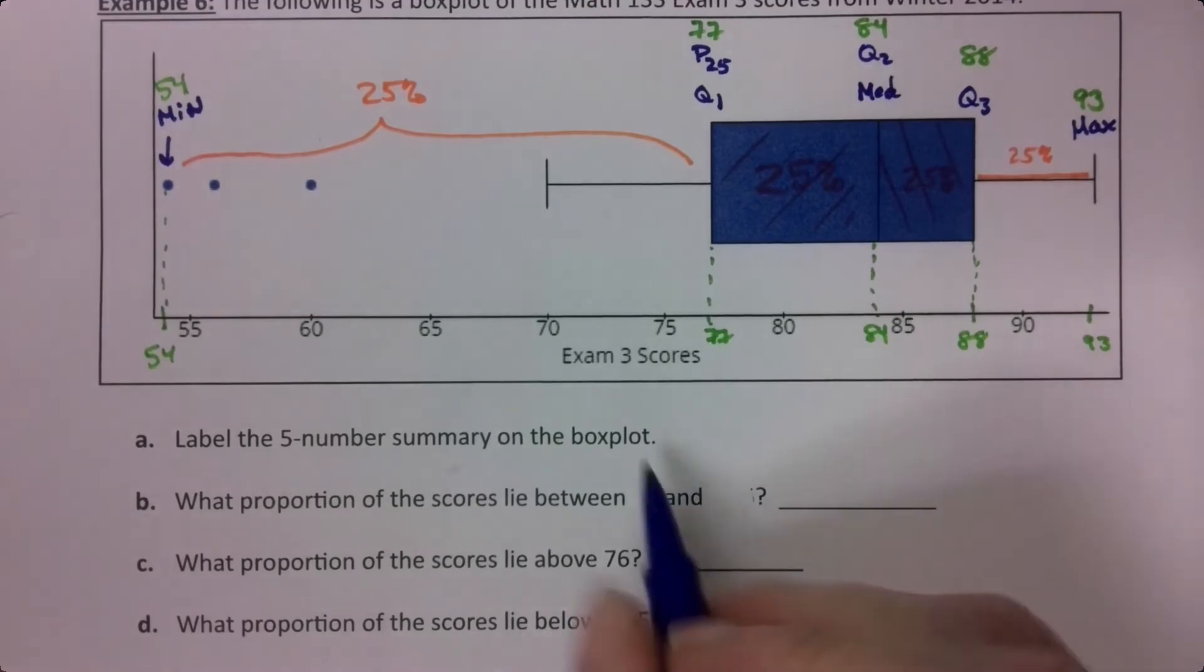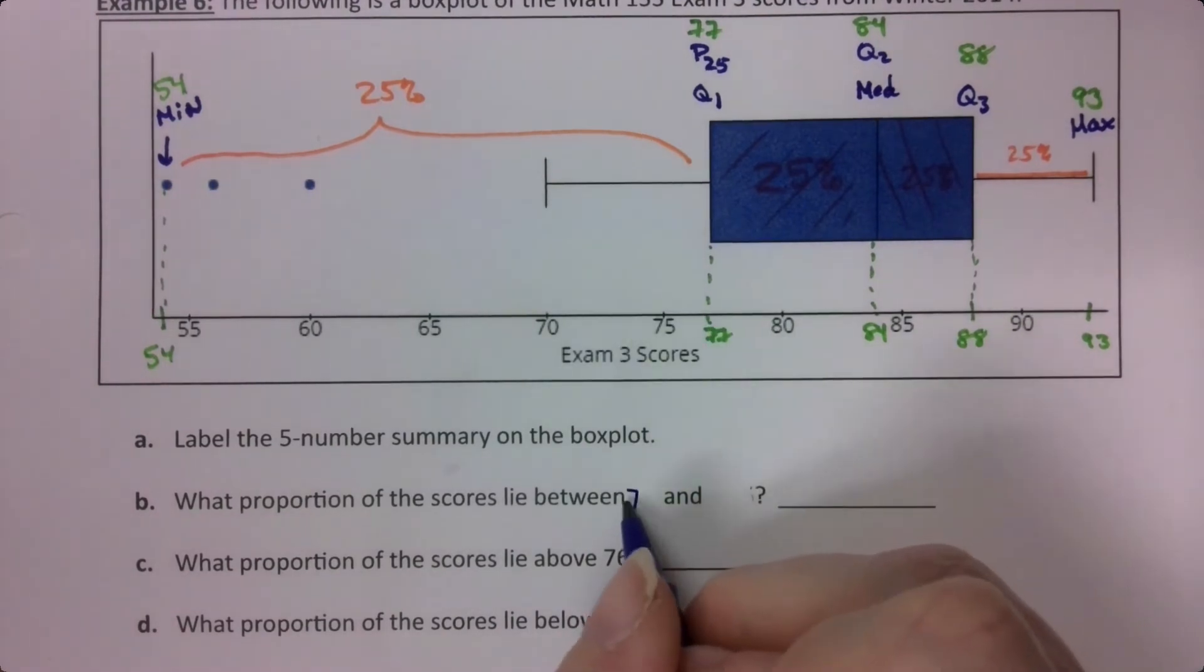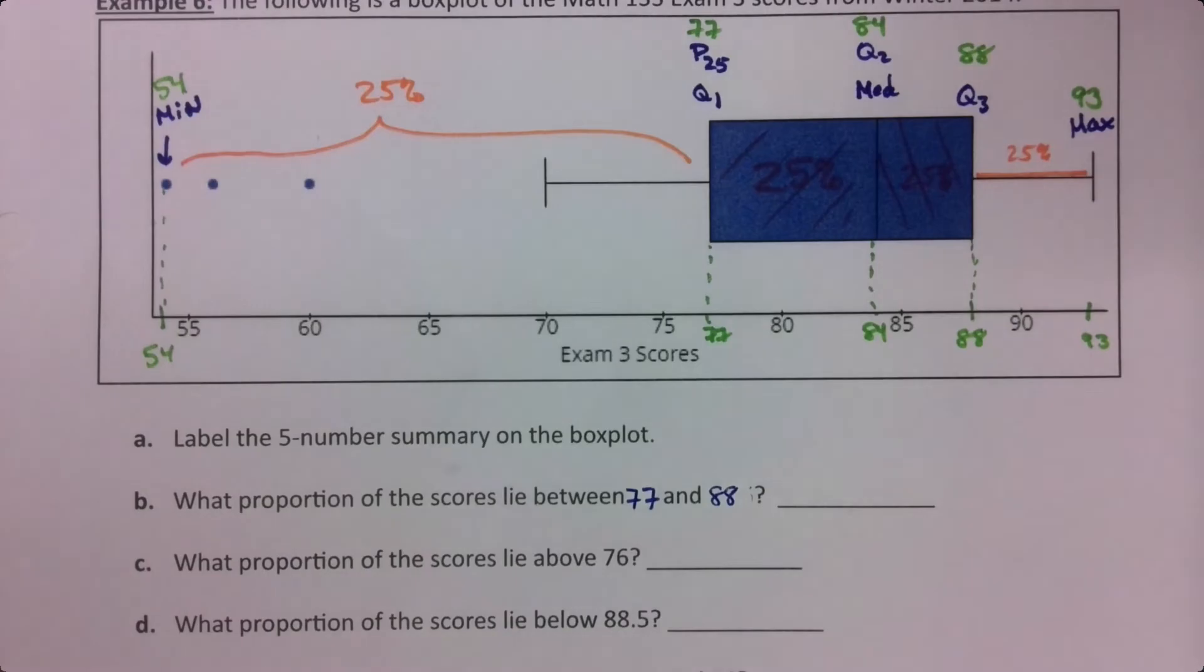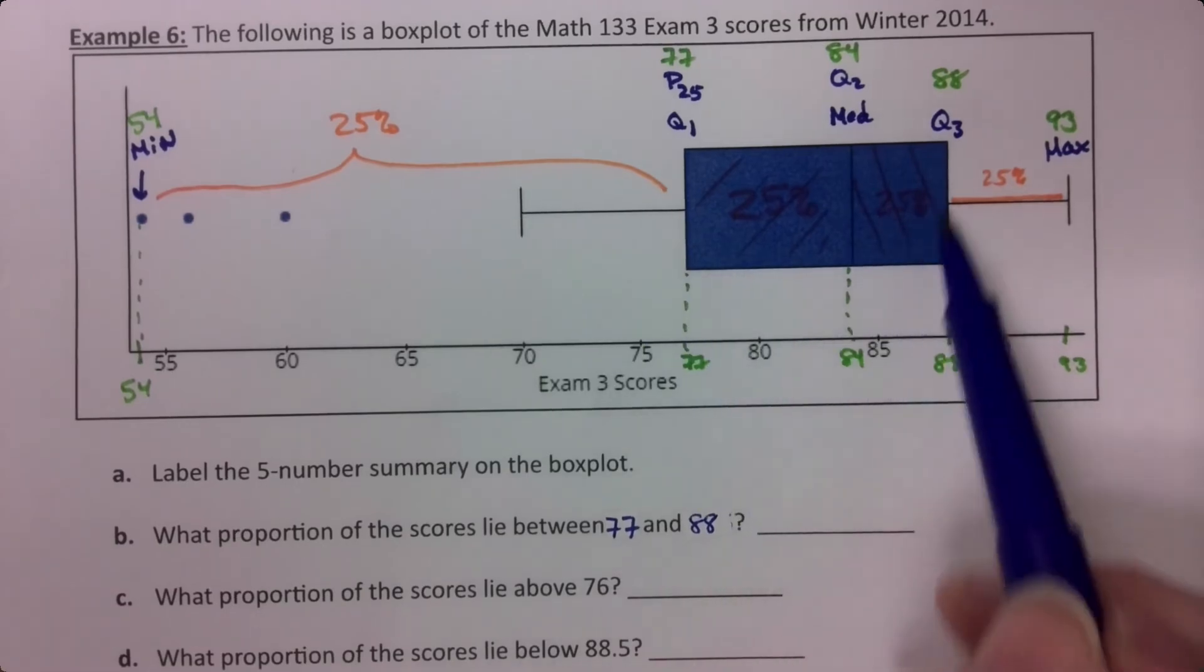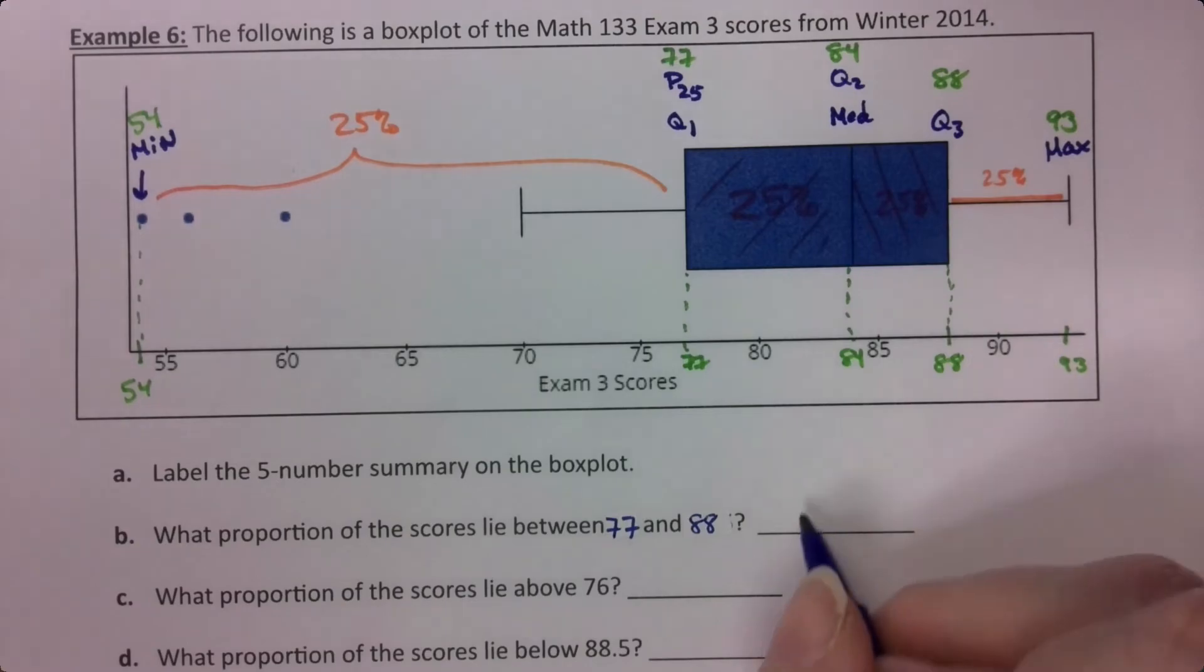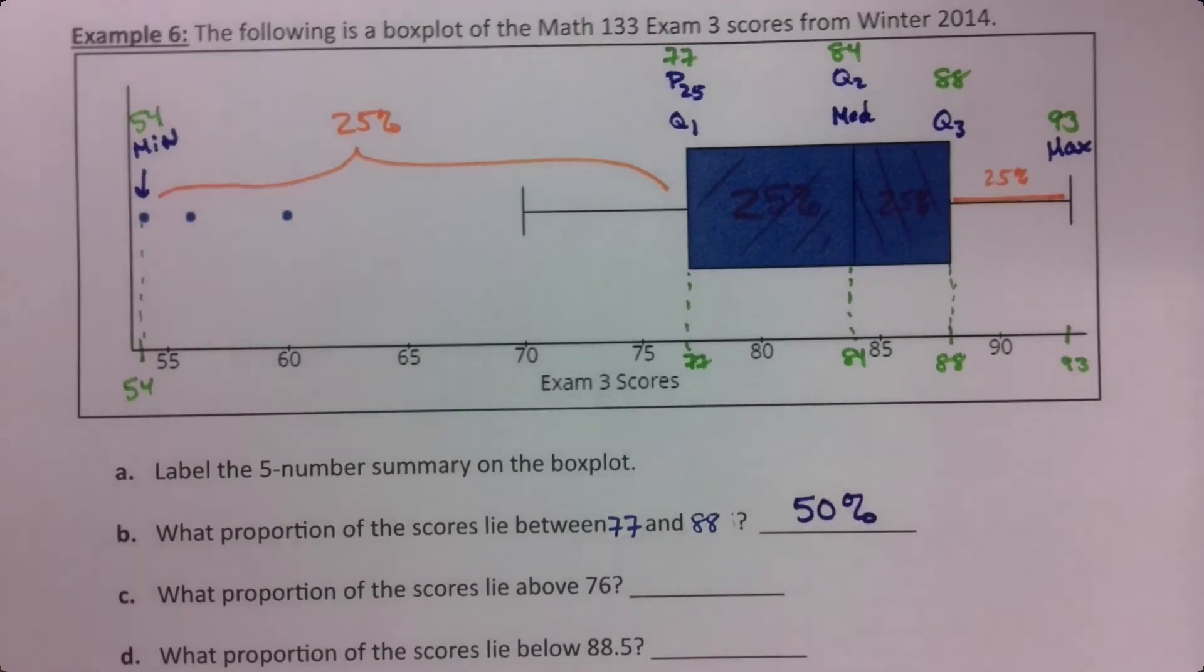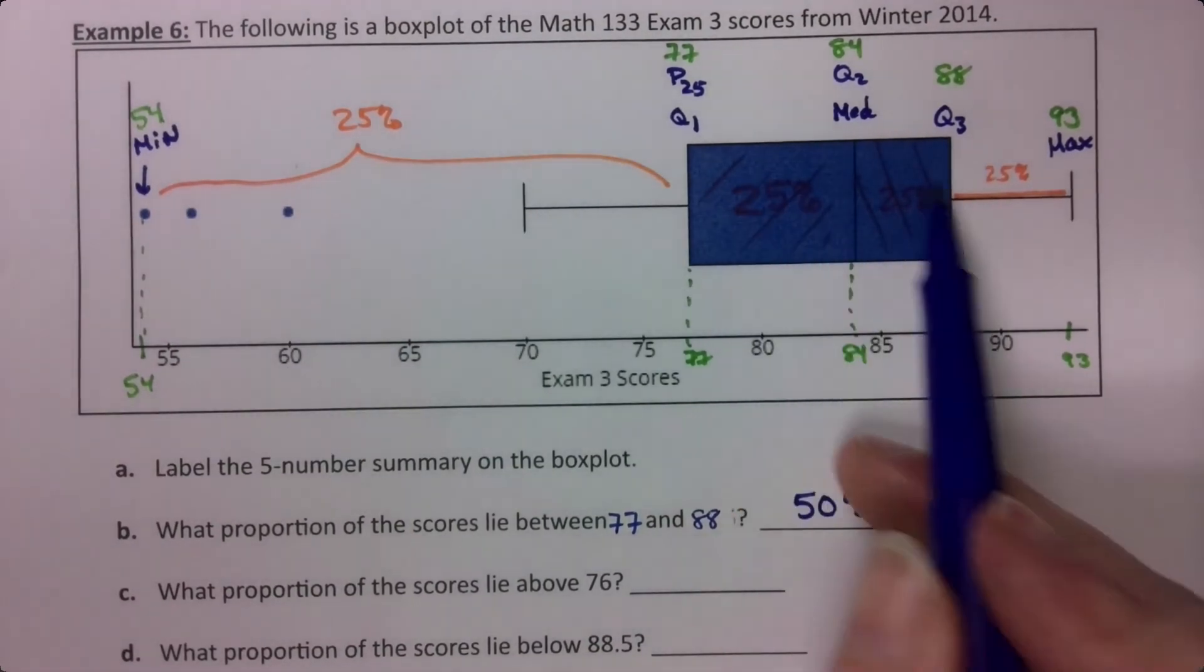Between 77 and 88 would be 50%, because there's 25% here and 25% here.